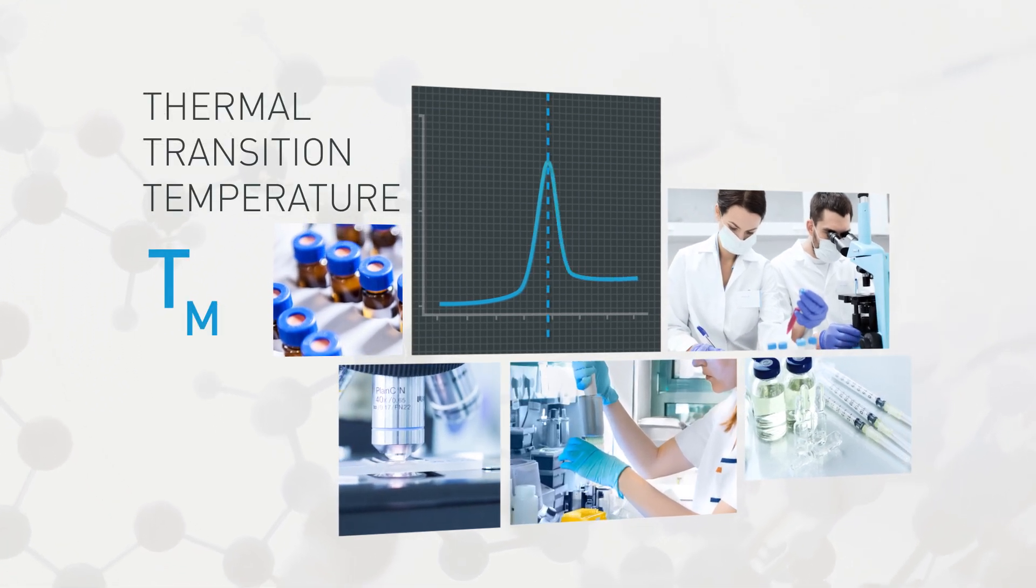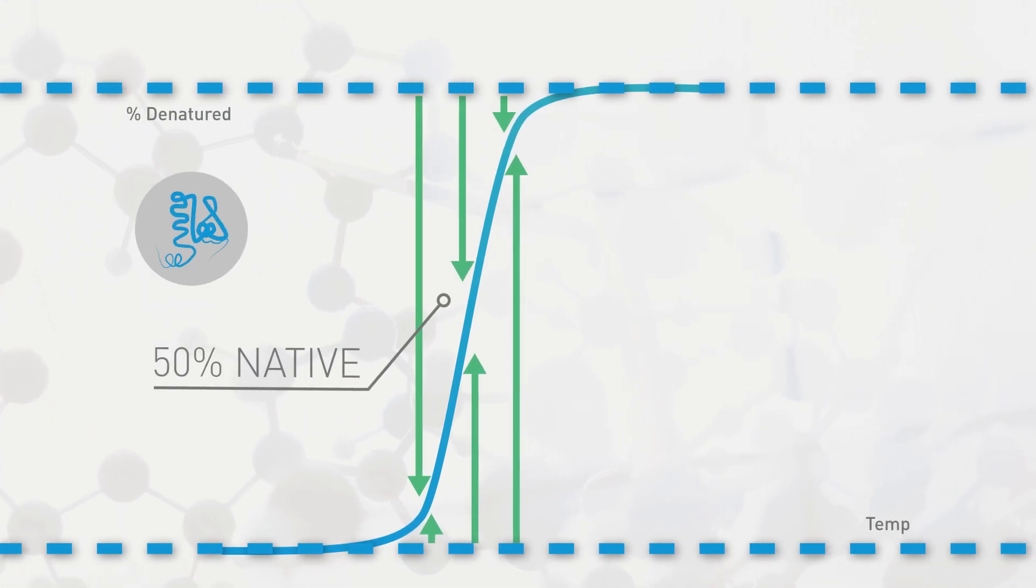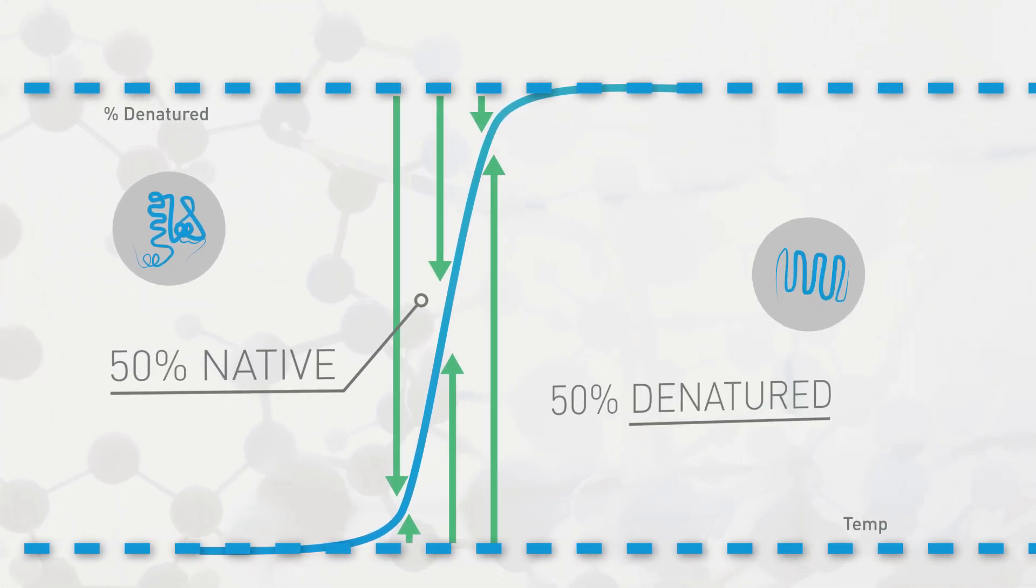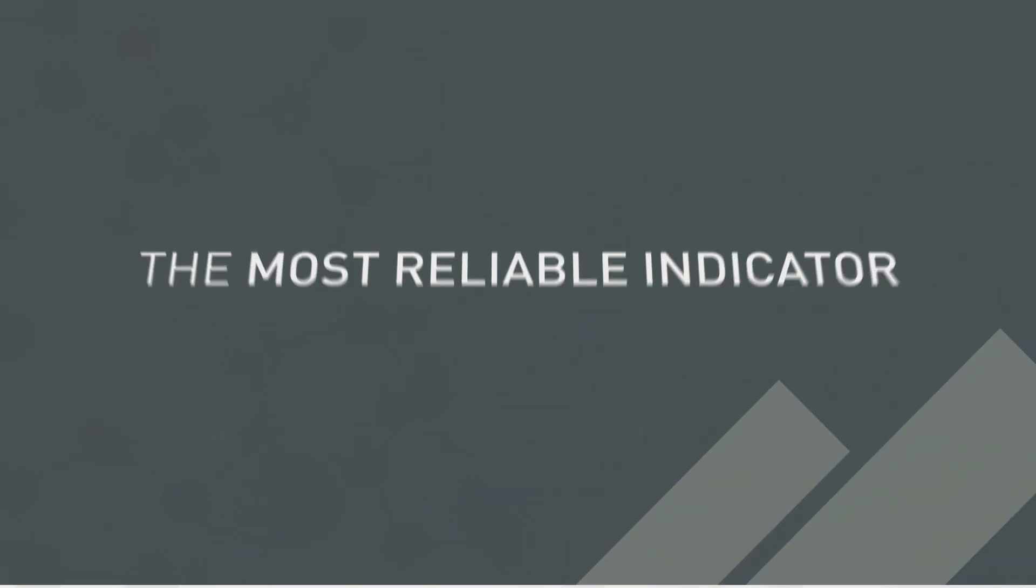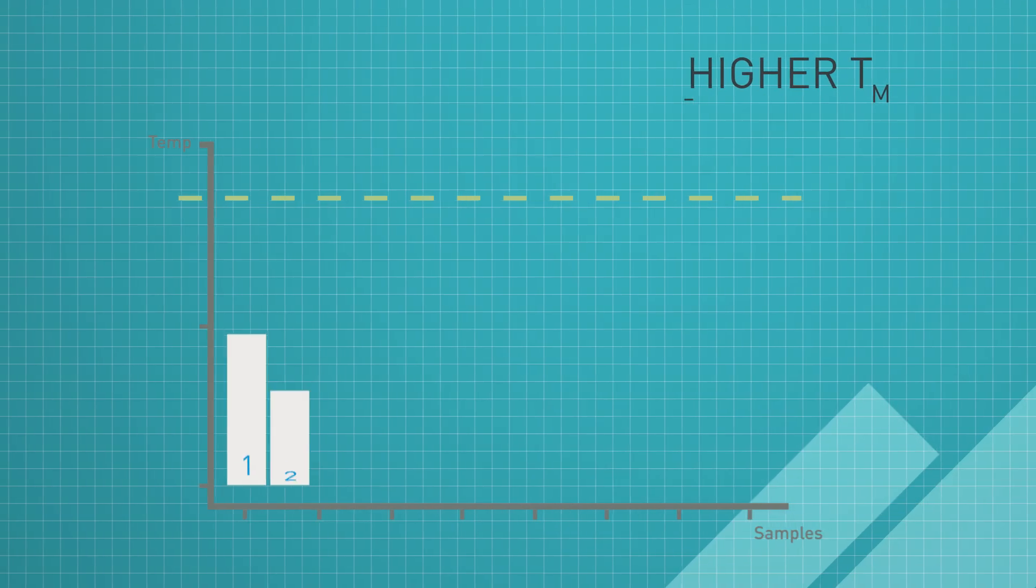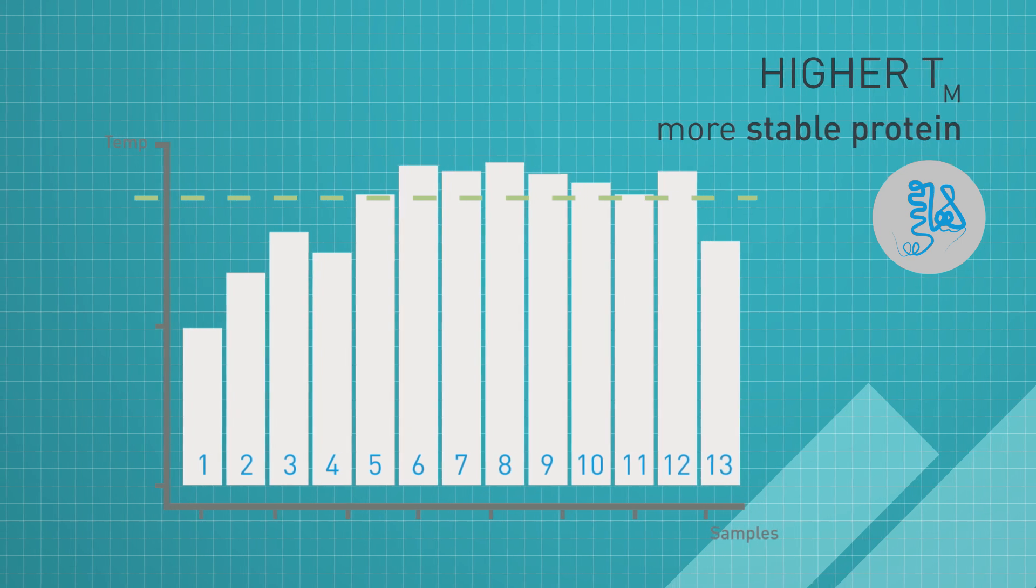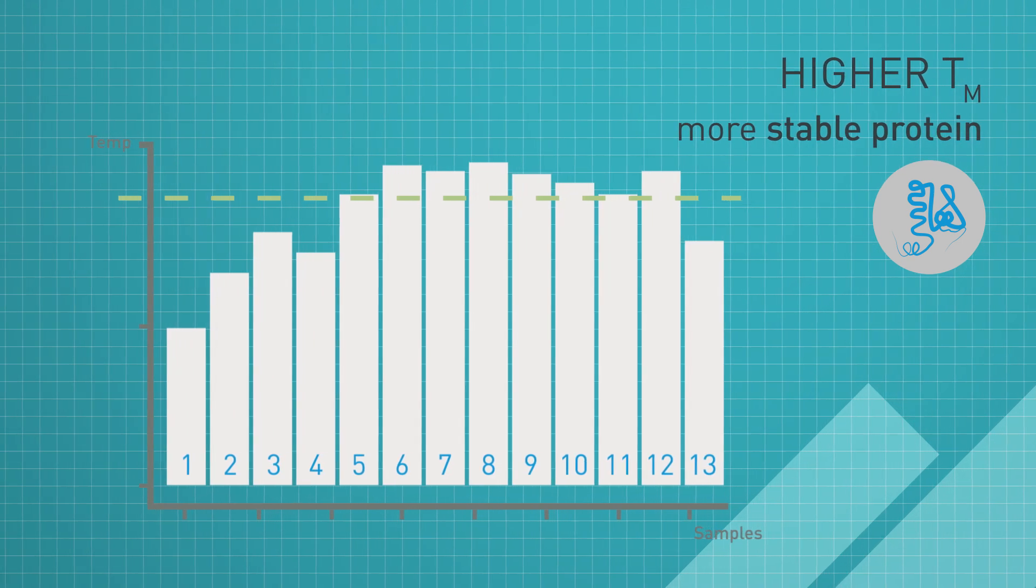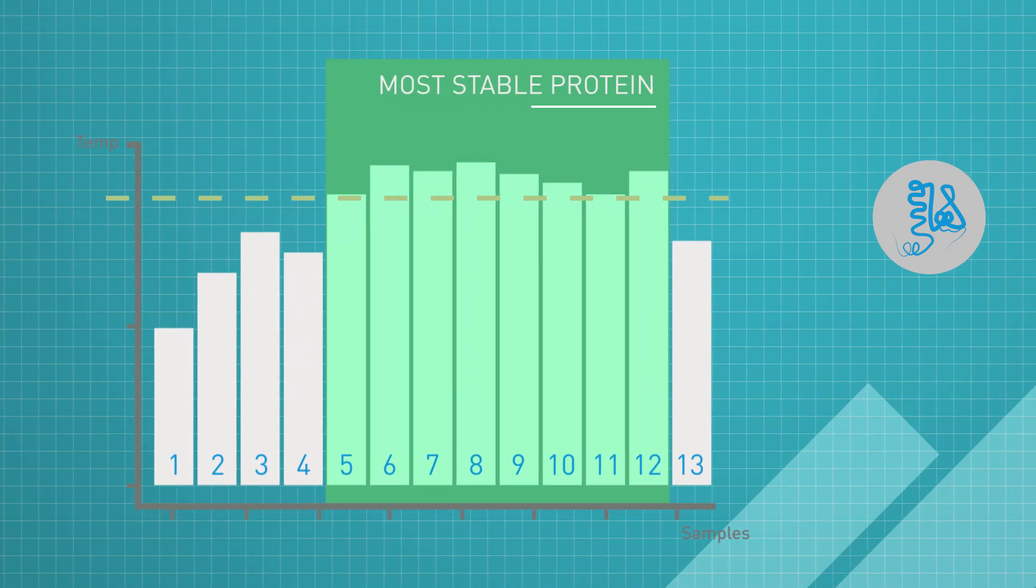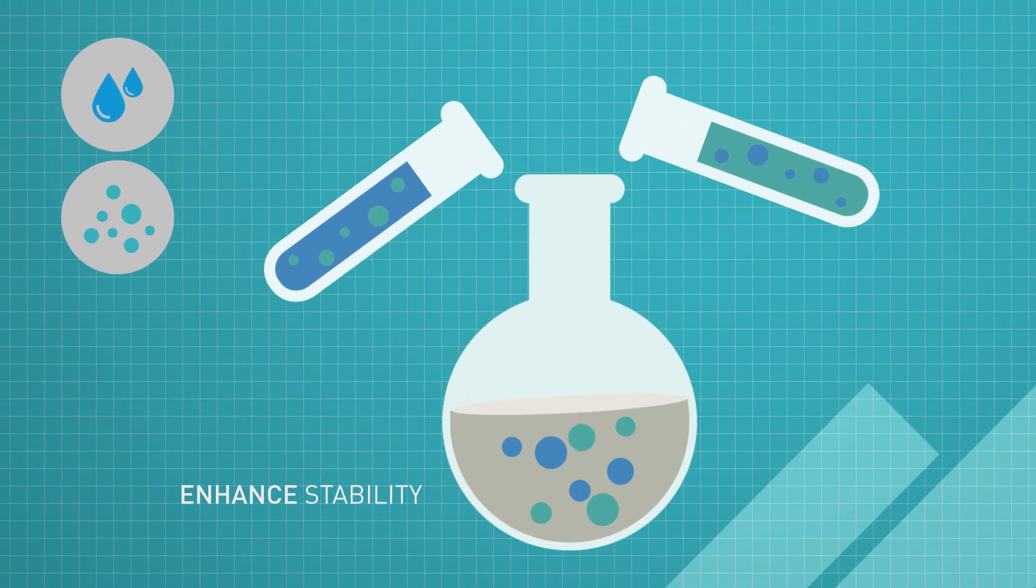The TM is the temperature at which 50% of the protein is native and 50% is denatured. It's the most reliable indicator of thermal stability. The higher the TM, the more stable the protein is, which is why TM screening is universally used to select the most stable engineered protein as well as the buffers and additives which can further stabilize it.